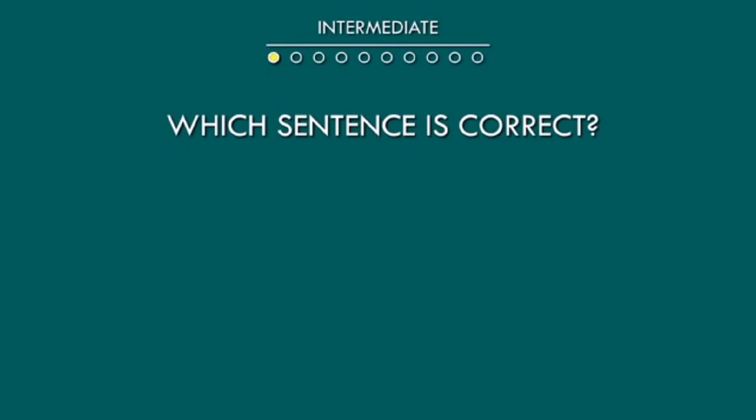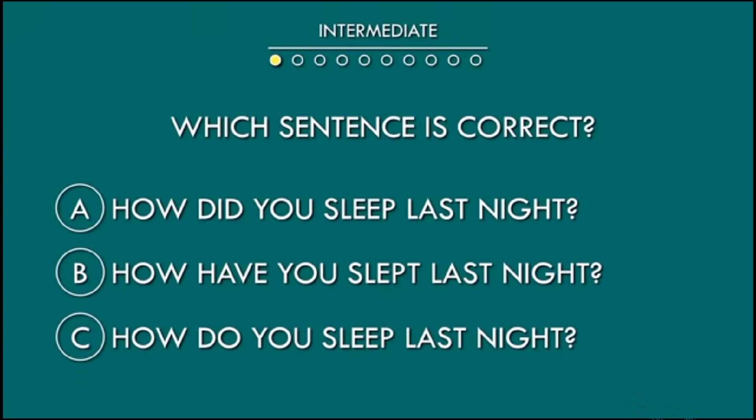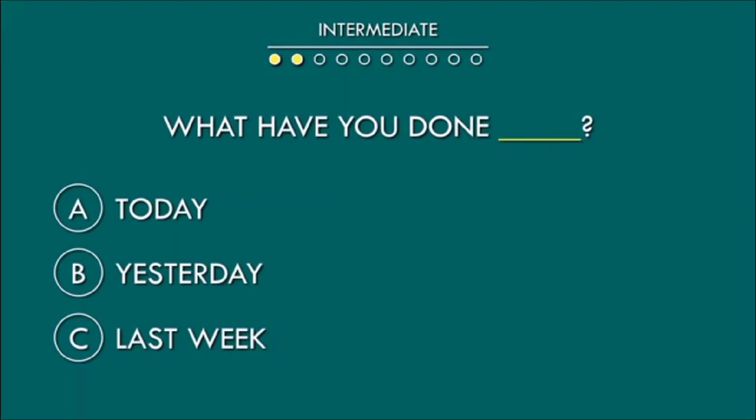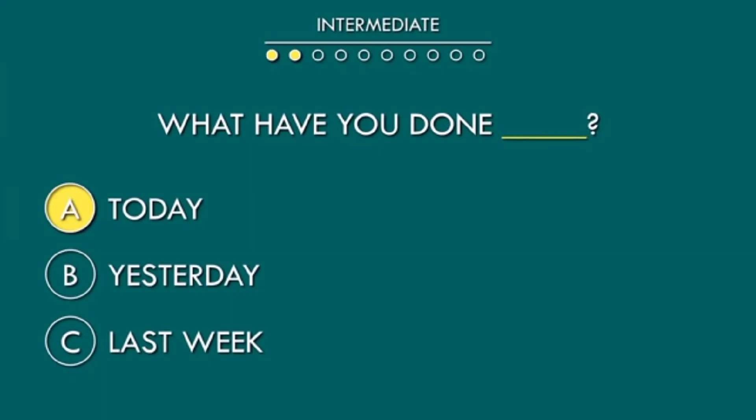Which sentence is correct? A: How did you sleep last night? B: How have you slept last night? C: How do you sleep last night? A is the correct option. What have you done this at all day yesterday last week? A is the correct option.